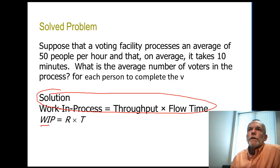Okay, well in this problem we're told that a voting facility processes an average of 50 people per hour. That's giving us a rate of 50 people per hour. And on average it takes 10 minutes, so that's the flow time: 10 minutes.